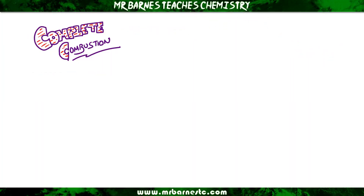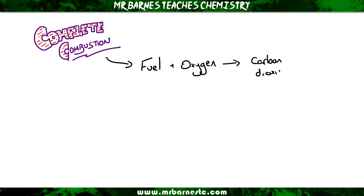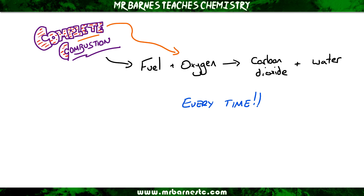Let's look at what's going on in terms of word and symbol equations. You take any fuel, react it with oxygen, and you get carbon dioxide and water - that's the same for any fuel. So regardless of what the fuel is, it reacts with oxygen and produces carbon dioxide and water. The only difference with complete combustion is you have lots of oxygen. If you don't have enough oxygen it becomes incomplete combustion, but we'll cover that in a different video.